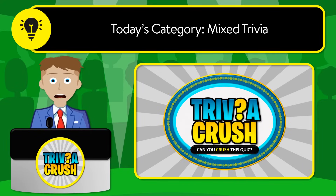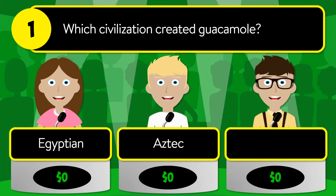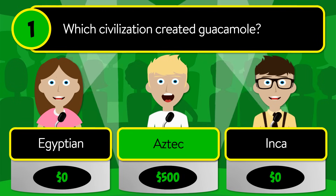Welcome to Trivia Crush. Today's category is mixed trivia. Be sure to stick around for the bonus question at the end. Let's get started. Question number one: which civilization created guacamole? Was it Egyptian, Aztec, or Inca?